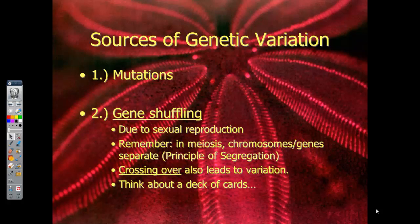Crossing over is the major event that happens during meiosis and is a reason that we are different from our parents and different from our brothers and sisters. We need to think about it like a deck of cards, where all the genes from the mother and from your father are shuffled before you become fertilized.